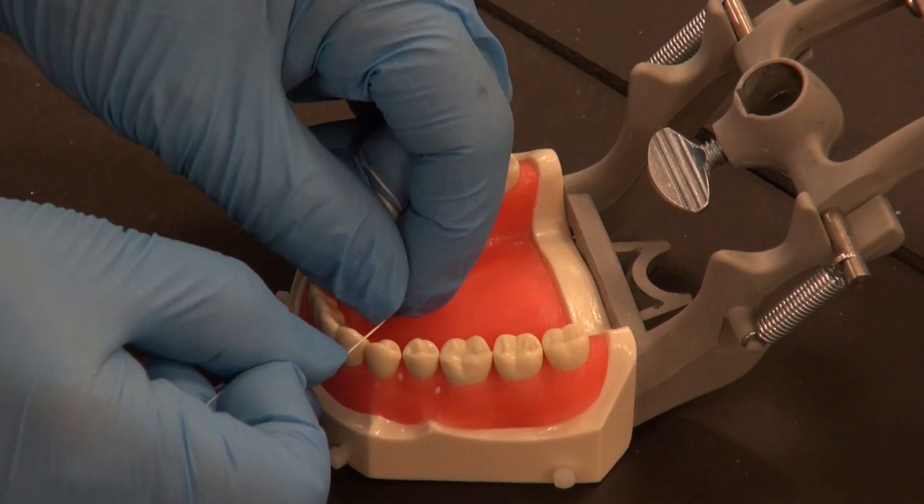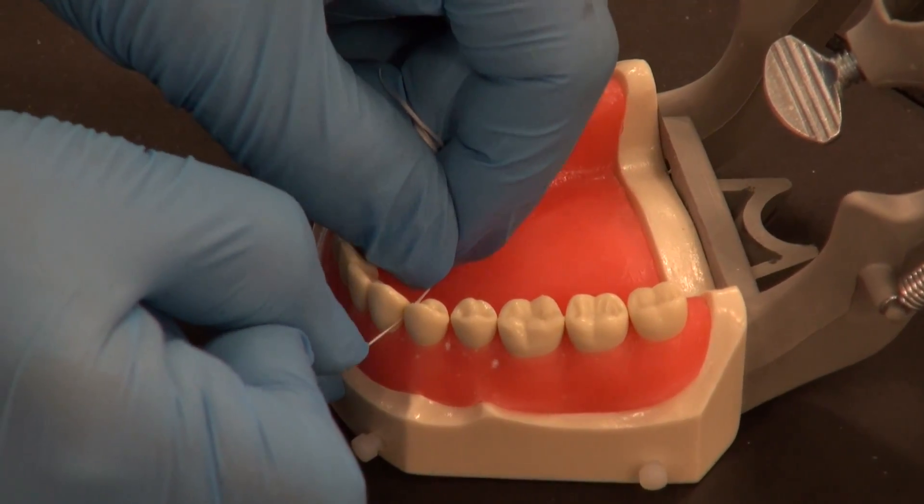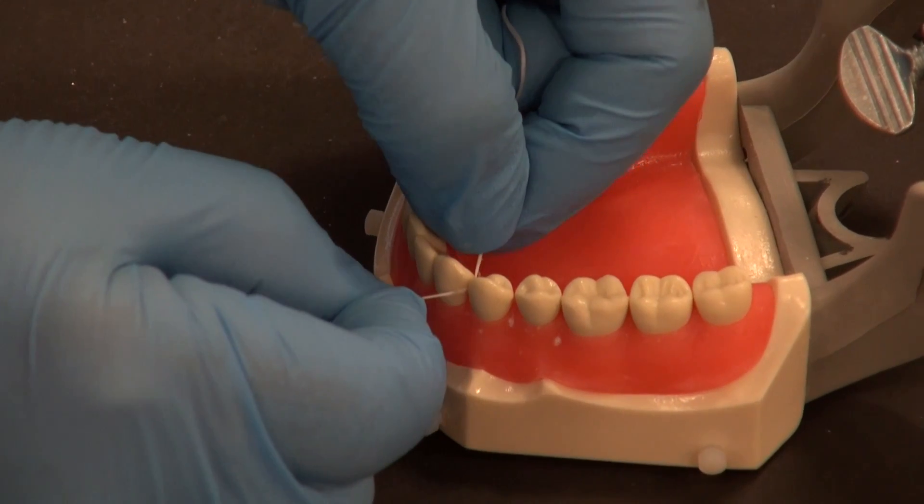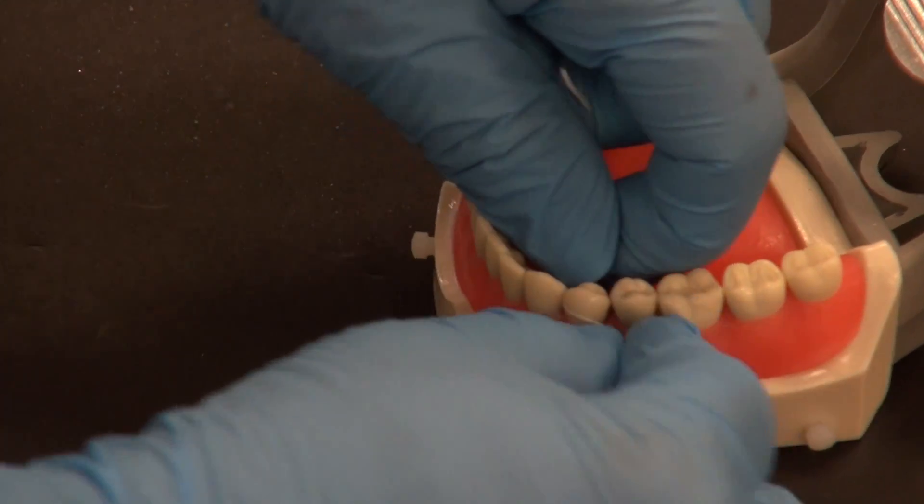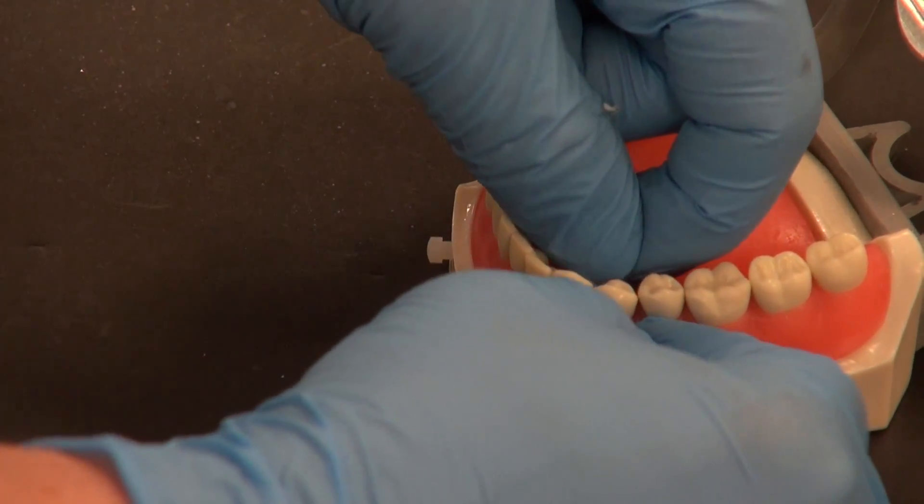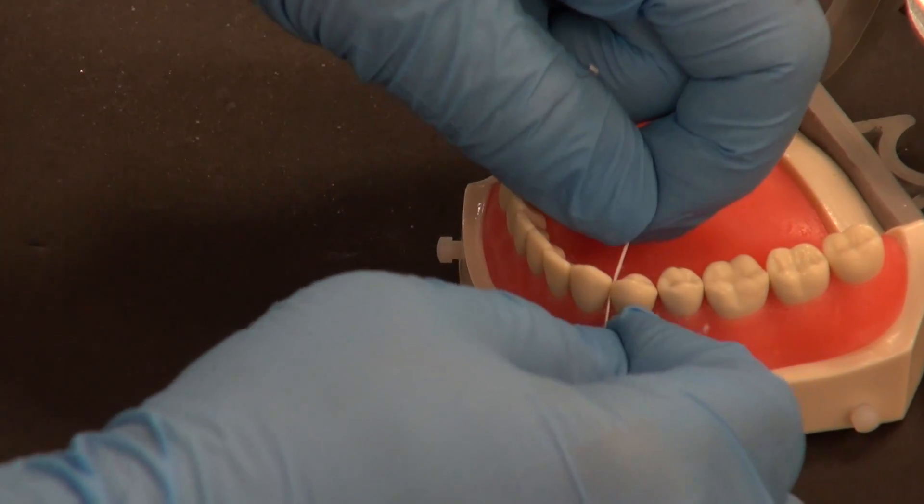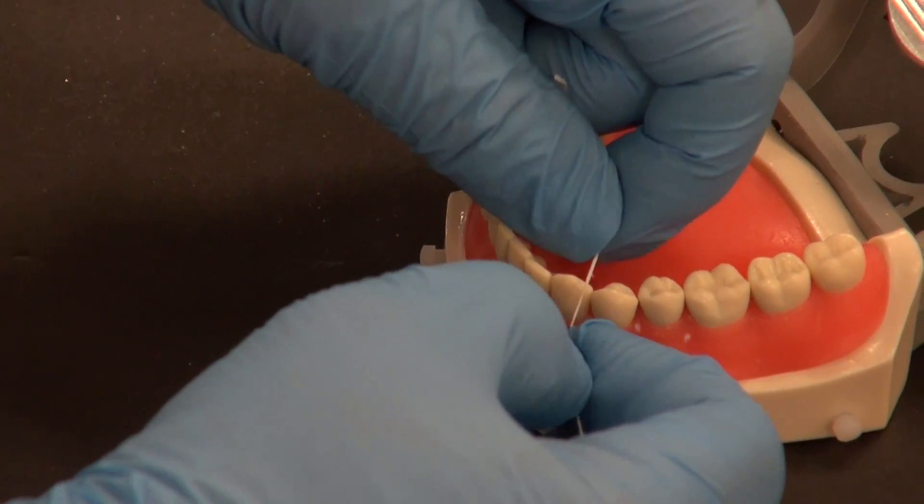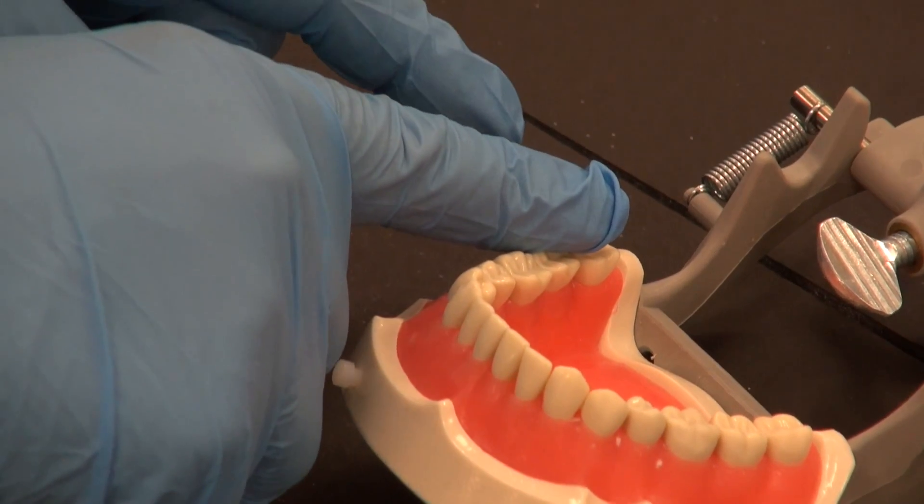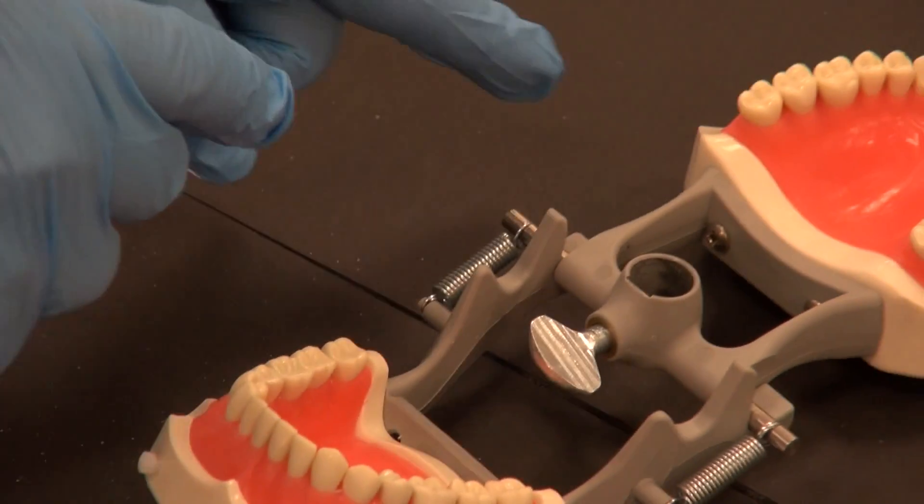Clean piece of floss. Seesaw in between the teeth. Good C wrap. One, two, three. Opposite way. One, two, three. Seesawing out. I'm going to do this again systematically and then move over to the upper arch.